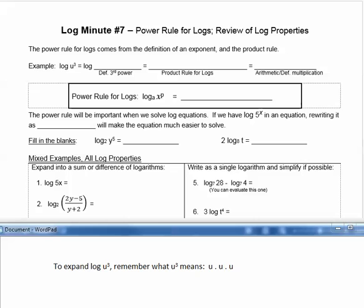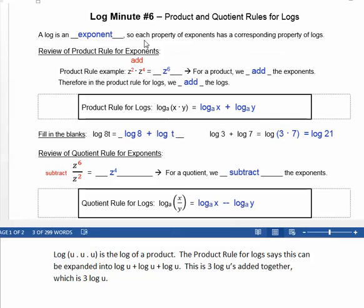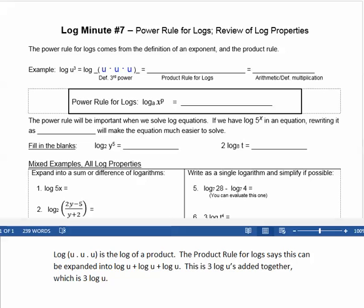To expand, the log of u cubed is an example to demonstrate the power rule. Remember what u to the third means? u to the third means u times u times u. The log of u times u times u is the log of a product, so we can use the product rule for logs: log of x times y equals log x plus log y. So log of u times u times u equals log of u plus log of u plus log of u.